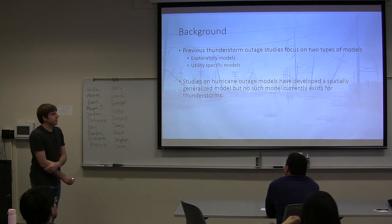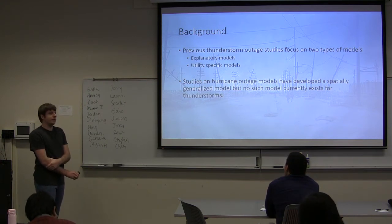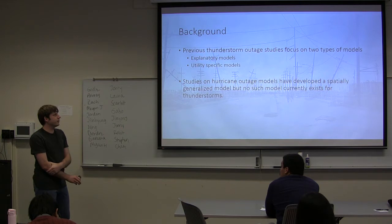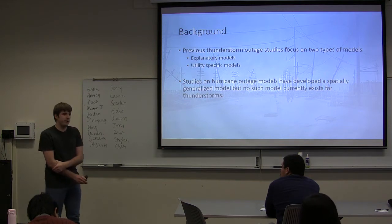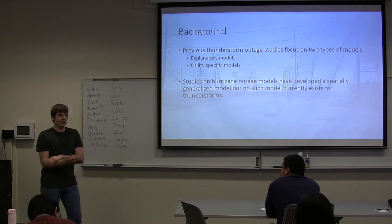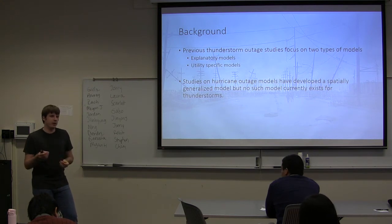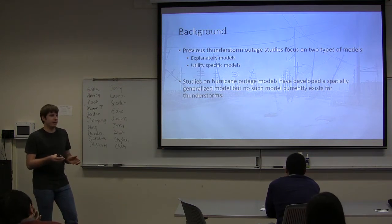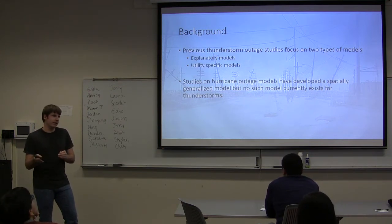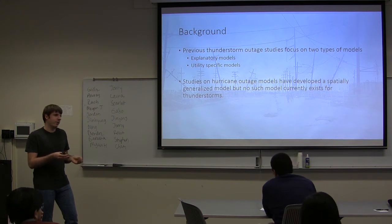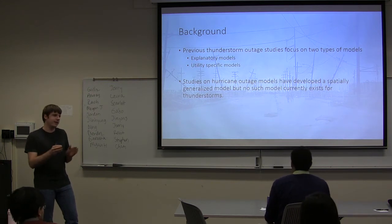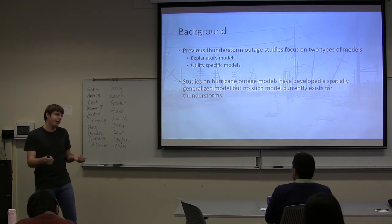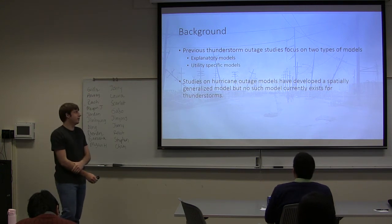Previous studies on power outages related to thunderstorms have fit into two areas. One is explanatory modeling, where they take variables such as lightning, wind, rain, and other things associated with thunderstorms and fit them with an observed data set to determine how much influence lightning has on power outages versus wind, breaking down different variables and how they impact the total number of outages.